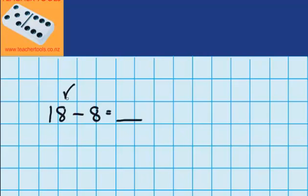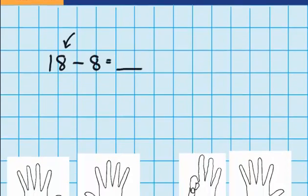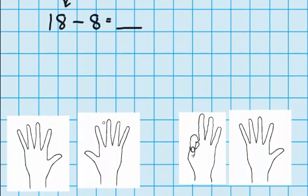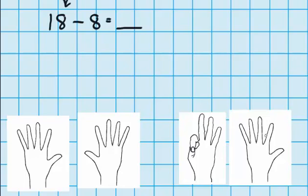To start with we need to imagine 18 using our fingers. And just like last time you can see that we're going to have to imagine a buddy's hands as well. Well hopefully you're thinking about something like this: your 10 fingers and 8 fingers on your buddy's hand. You can see that's made up of 5 and 3.